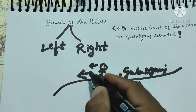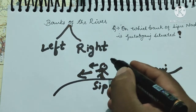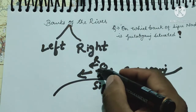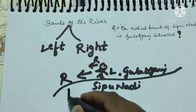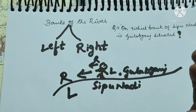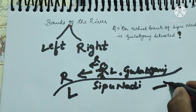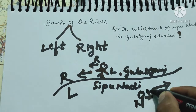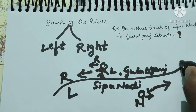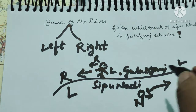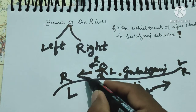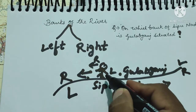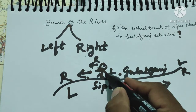If you are facing the direction of the river's flow, your right hand side becomes the right bank and your left hand side becomes the left bank. It is very simple — jis taraf right hand hai woh right bank ho gaya, jis taraf left hand hai woh left bank ho gaya. So this will be the right bank and this will be the left bank.